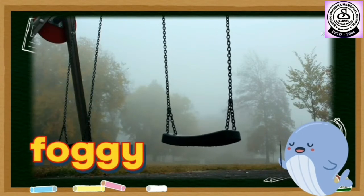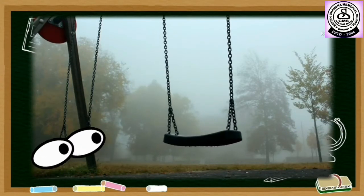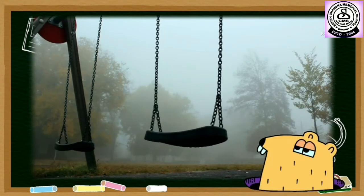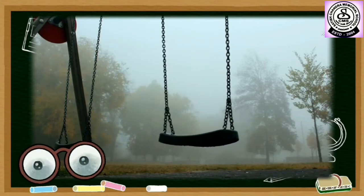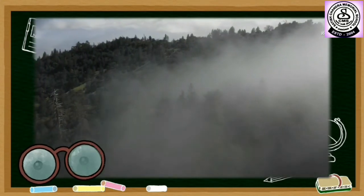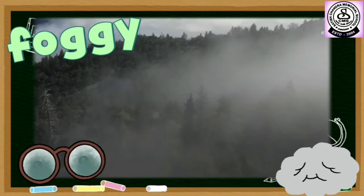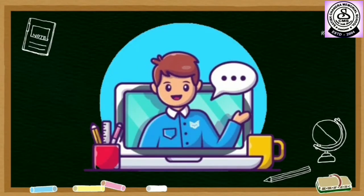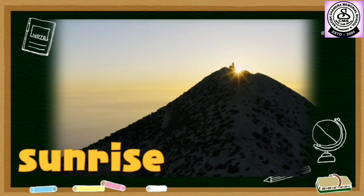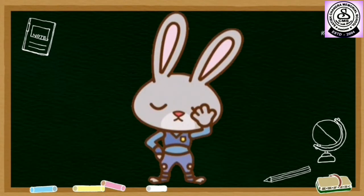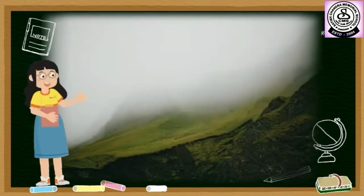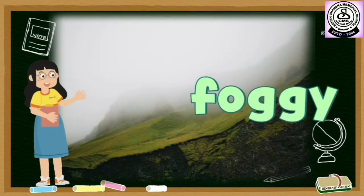Foggy. In this video, can you see the trees which are far in distance? No, we could barely see the things which are far in distance when the weather is foggy. For example, you want to see the sunrise early in the morning, but you couldn't see the sunrise. Why? Because of the foggy weather.